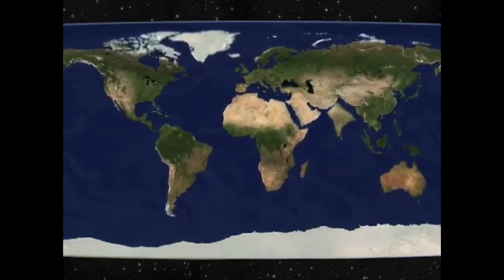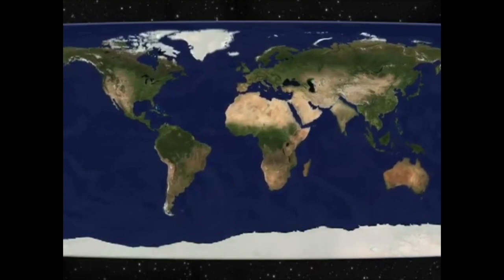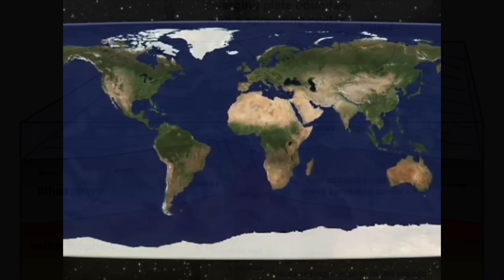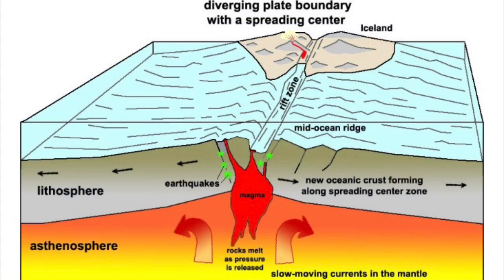During early Jurassic, spreading centers and oceanic rifts formed between North America and Eurasia, between North America and Gondwana, and also between various segments of Gondwana itself. This formation of spreading centers initiated the breakup.